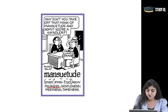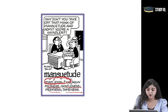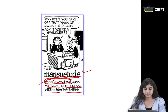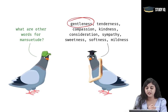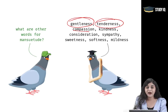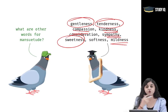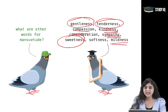Mansuetude: mildness, gentleness, meekness, tameness. As you can see it is pronounced 'mansuetude.' A caricature tells us more: 'Why don't you take off that mask of mansuetude and admit you are a swindler.' Some synonyms of mansuetude are gentleness, tenderness, compassion, kindness, sympathy, mildness, sweetness — all of these are synonyms of mansuetude.